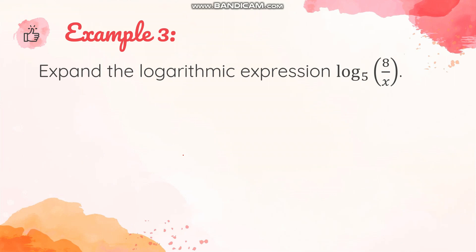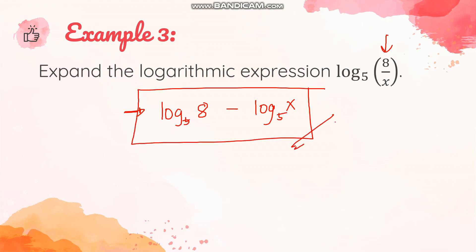Let's have this example: expand the logarithmic expression, logarithm of 8 over x base 5. Looking at the argument, you will see it is in fraction form — it's 8 over x. So we can expand this by writing the numerator and denominator into two different logarithmic expressions. What we will have now is logarithm of 8 base 5 minus logarithm of x base 5. That is the expanded form. Just get the numerator, get the denominator, write them separately into two logarithmic expressions, and connect with subtraction.